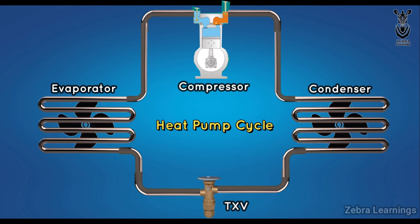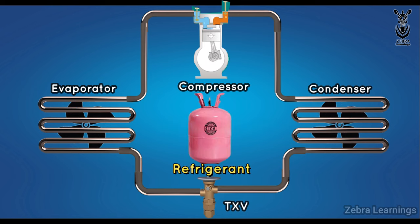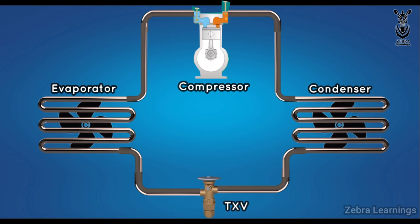This cycle is also called the heat pump cycle. Through this cycle, we remove the heat in the area where we want to cool. Refrigerant is the important material we use in this cycle to remove heat. First, let's look at its components.